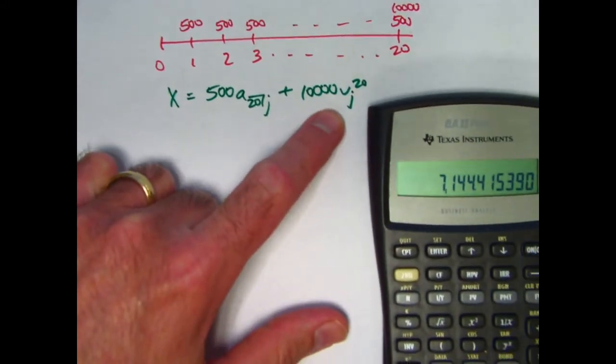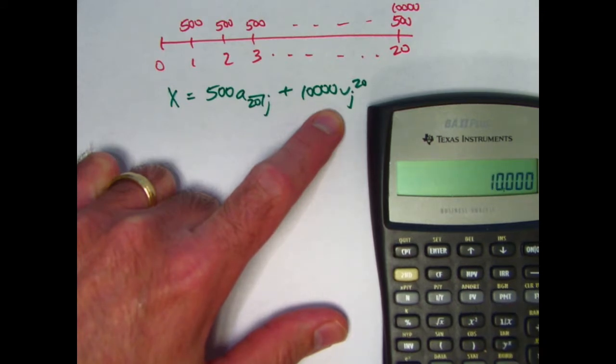Now let's find this one. J again is in register zero. Add one to it, reciprocal, 20th power, times 10,000. Add that to what's in register one.